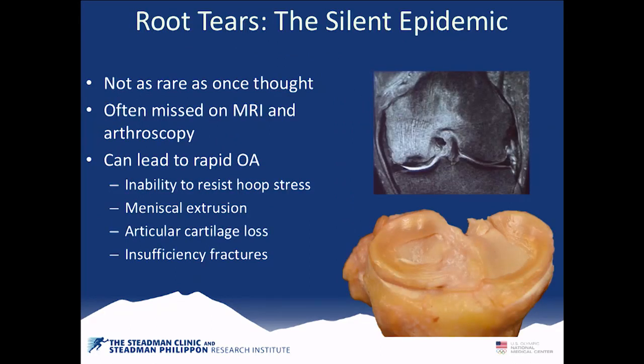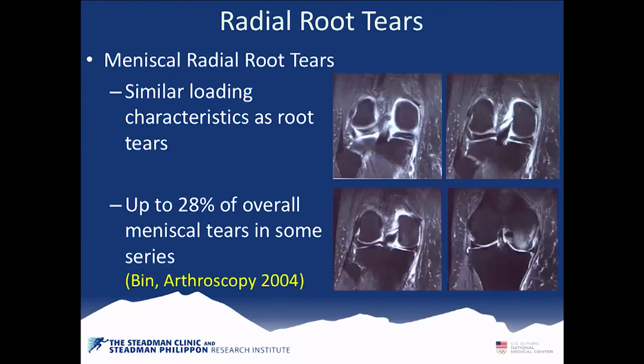Root tears have been described as a silent epidemic. They're definitely not as rare as we thought, and most of us didn't even recognize them 10 years ago. They were often missed on MRI and arthroscopy. The problem is they can lead to the rapid development of osteoarthritis because of the inability for the meniscus to resist hoop stress. All the cases in the past that were probably idiopathic spontaneous osteonecrosis were caused by root tears, and that's been shown in prospective studies.